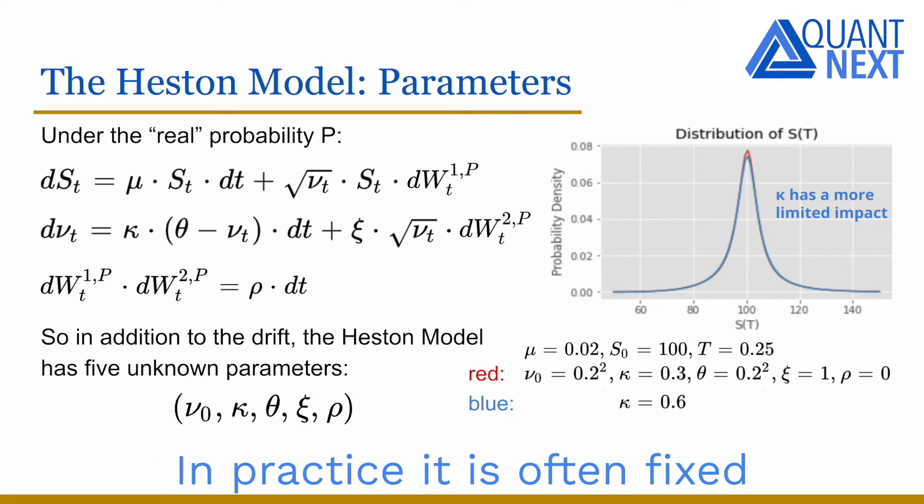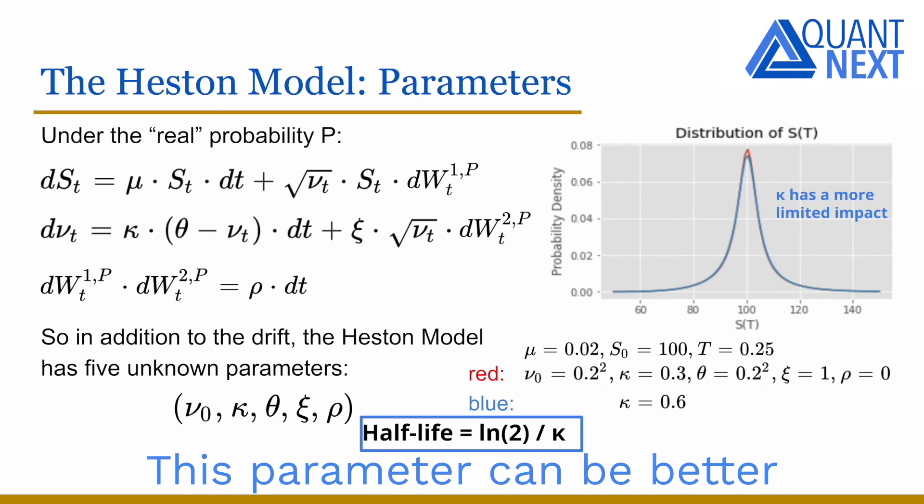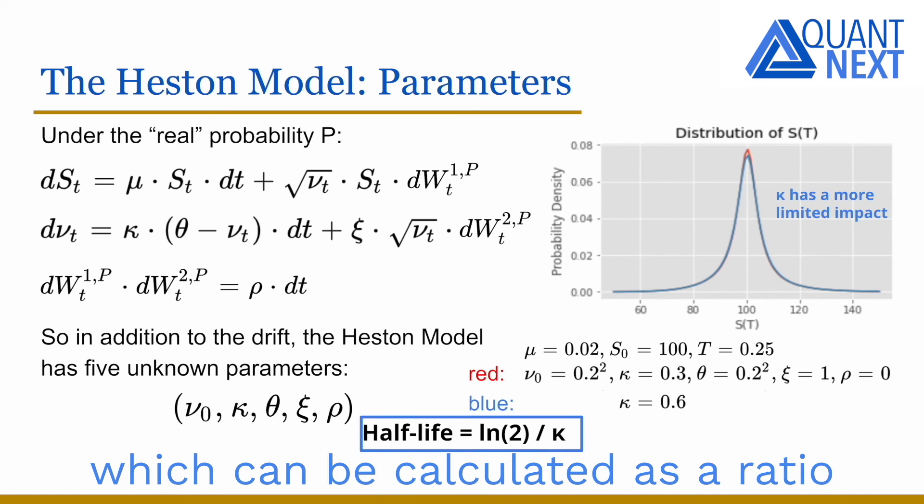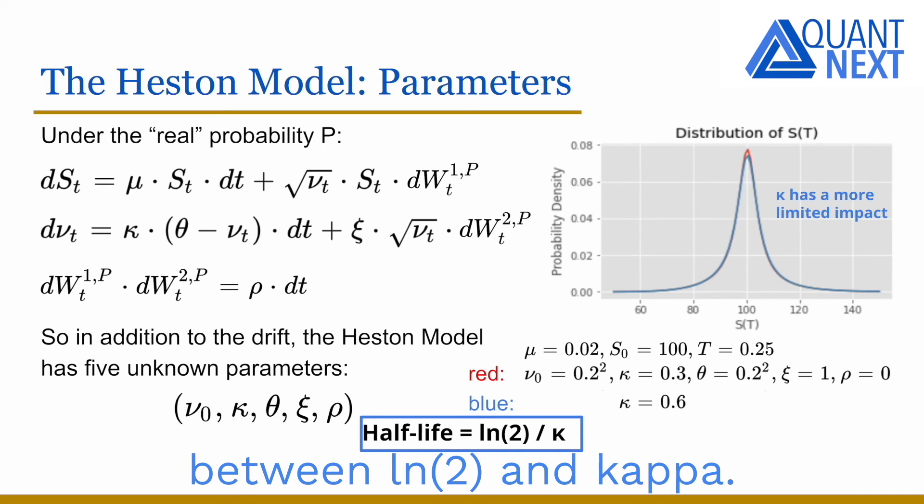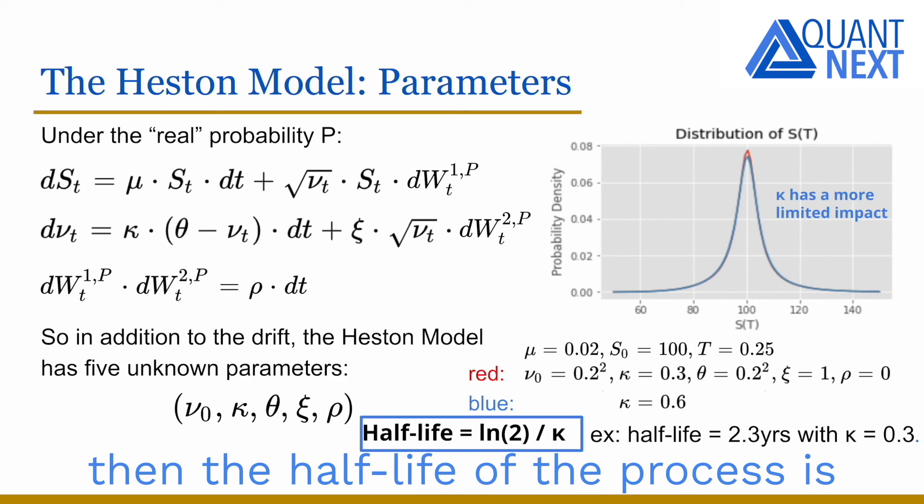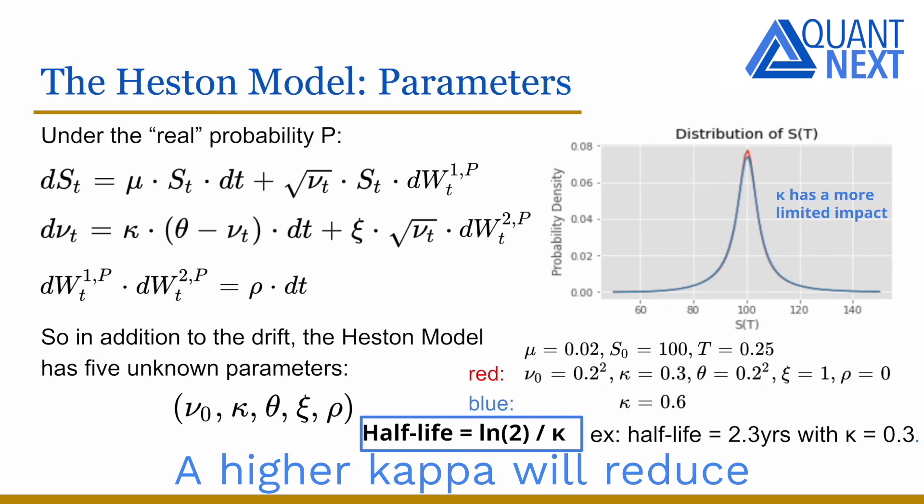The speed of reversion parameter kappa has a more limited impact on the asset price distribution. In practice, it is often fixed, all other parameters being enough to calibrate the model. This parameter can be better interpreted with the concept of half-life. The half-life is the average time it will take to get halfway back to the mean, which can be calculated as a ratio between the log of 2 and kappa. For example, if kappa is equal to 0.3, then the half-life of the process is close to 2.3 years. A higher kappa will reduce the half-life as it will increase the speed of reversion.